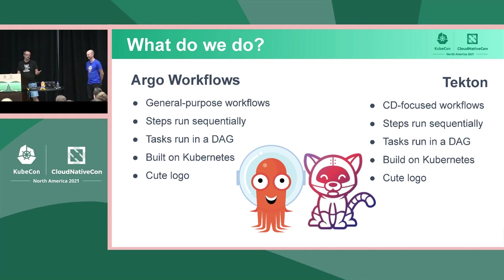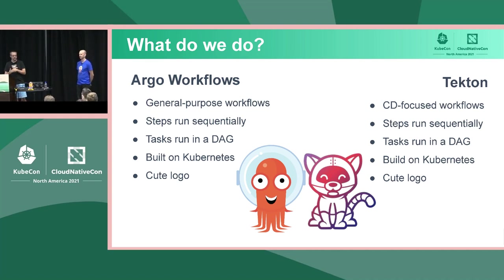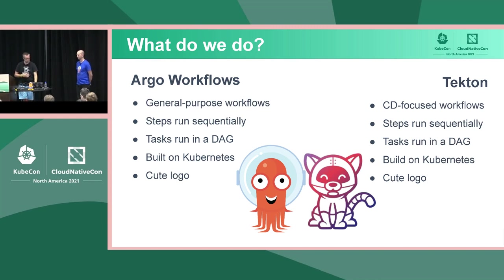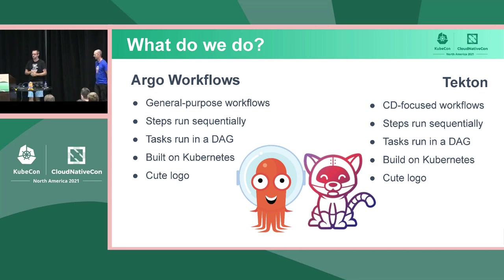What do we do? Alex works on Argo Workflows. Argo Workflows is a general-purpose workflow execution engine. Steps in Argo run sequentially and tasks in Argo run in a DAG, a directed acyclic graph. It's built on Kubernetes and has a cute logo. Tekton is also a continuous delivery-focused workflow engine — steps run sequentially, tasks run in a DAG, built on Kubernetes, and we also have a cute logo. They're friends.